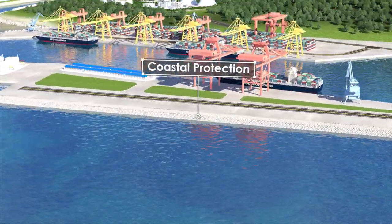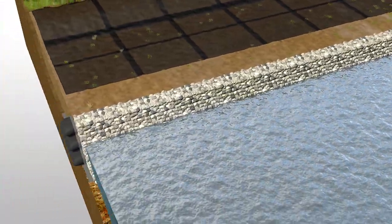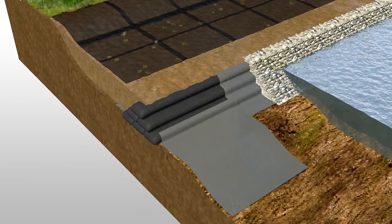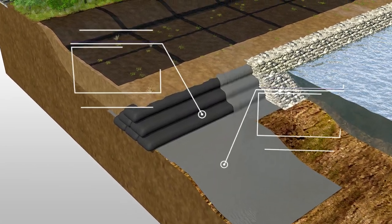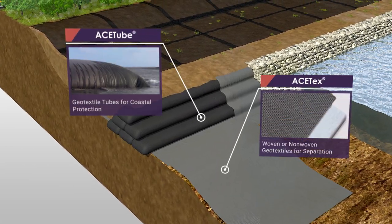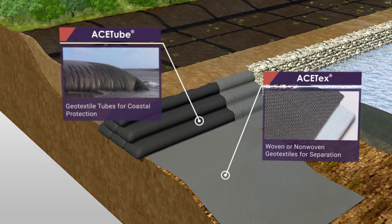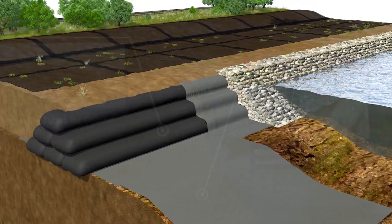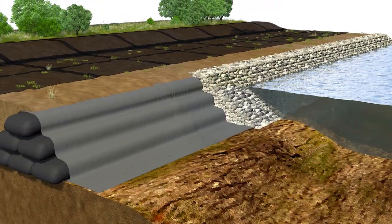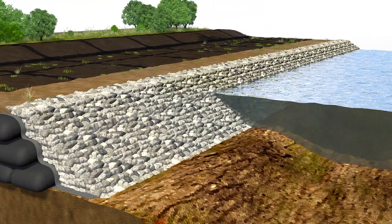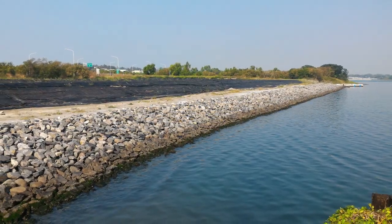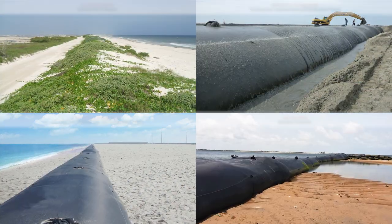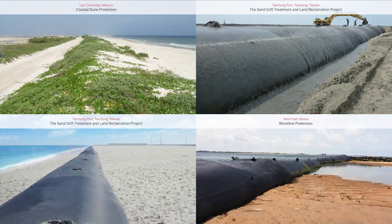Coastal Protection: Building seawall and revetment with ACE tube geotextile tube can effectively decrease the impact energy of the waves. This method is fast and easy, and uses in-situ reclaimed sand to fill the geotextile tube, which can greatly reduce material purchase and transportation costs.